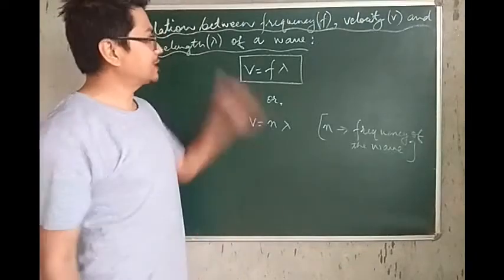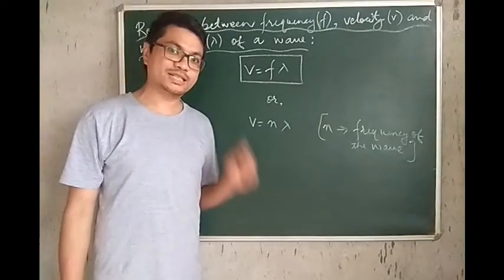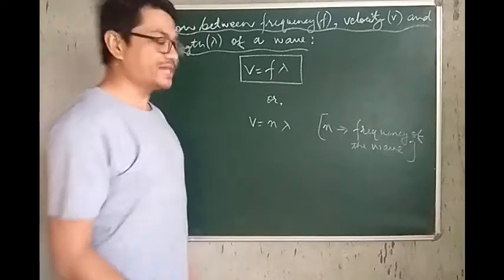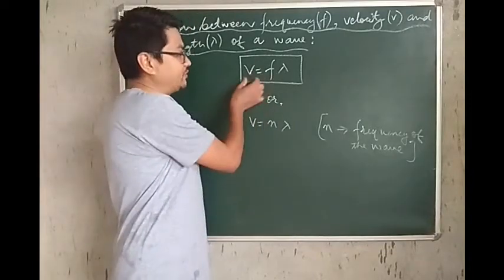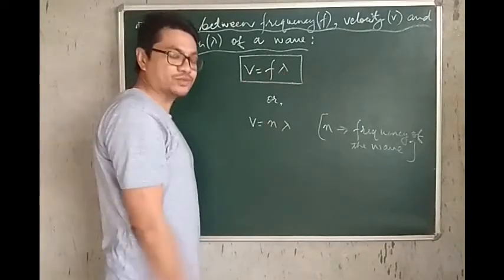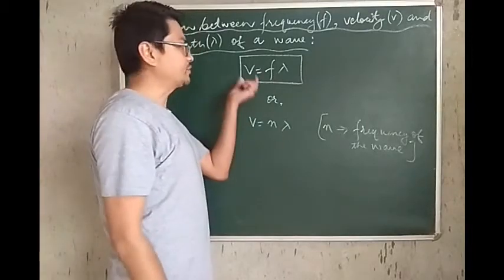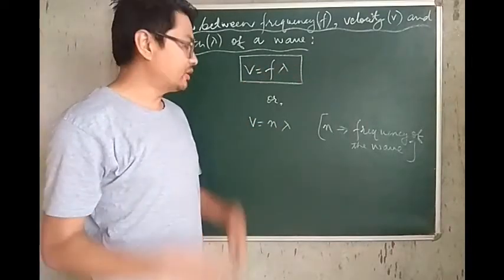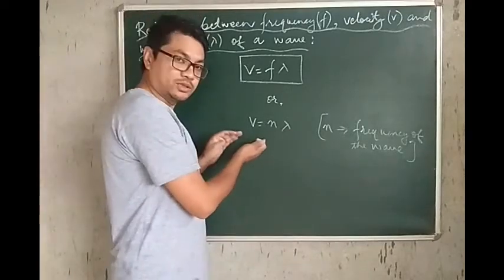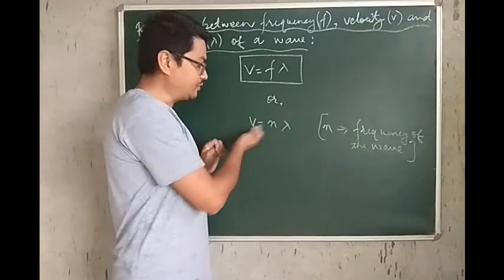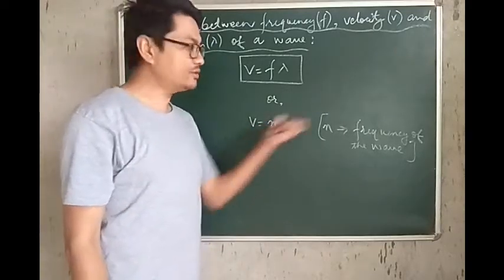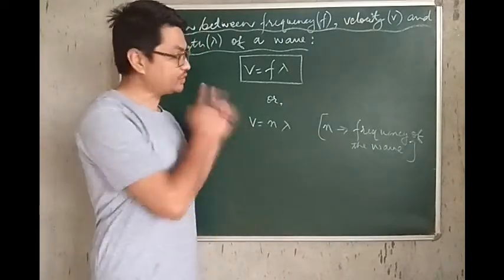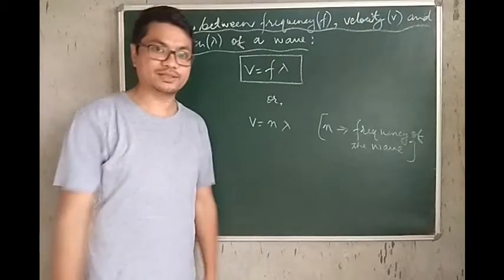Looking at the relation between frequency, velocity and wavelength of a wave — just a recap: the relation is V = F × λ, where V is the velocity, F is the frequency, and λ is the wavelength of the wave. In some books you will see it written as V = Nλ, where N represents the frequency of the wave. This relation is very important, so don't forget it.